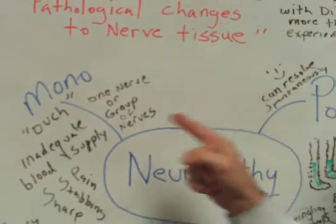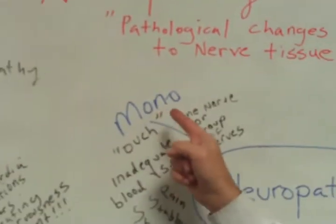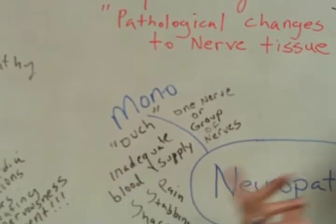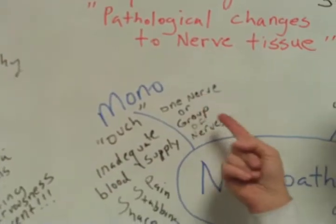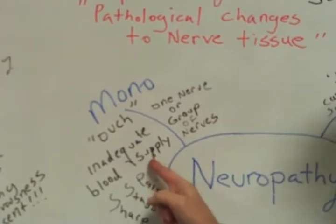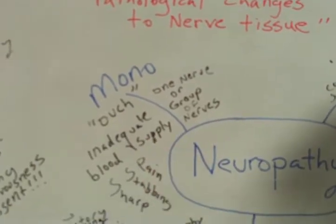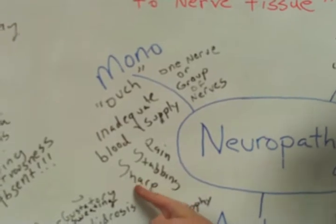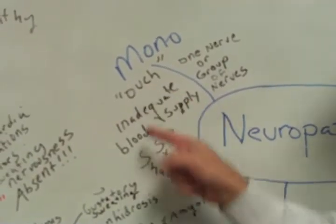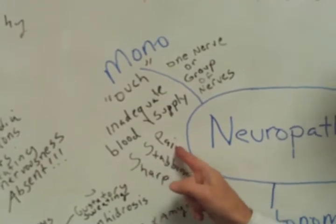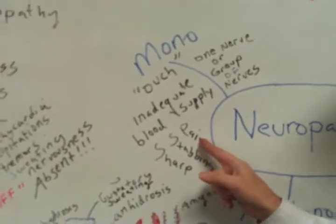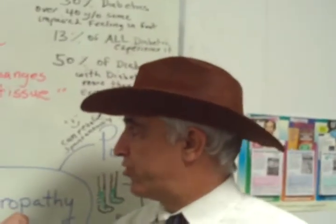Let's take a look at mononeuropathy — I call this the 'ouch.' In mono, it affects one nerve or a group of nerves caused by inadequate blood supply to a muscle, and is characterized by sharp stabbing pain, sometimes relieved with walking. That's mononeuropathy.